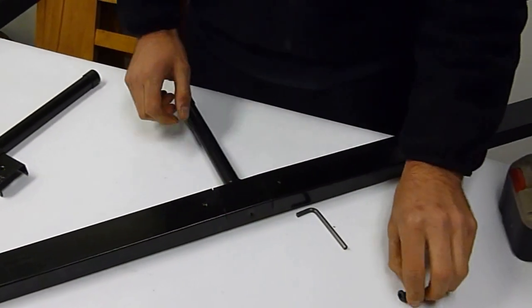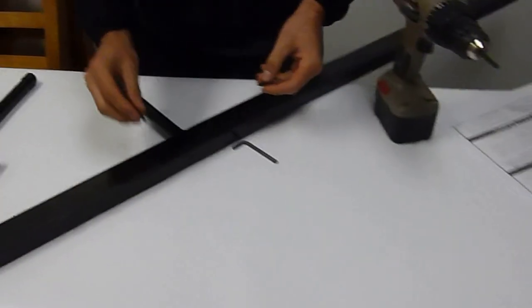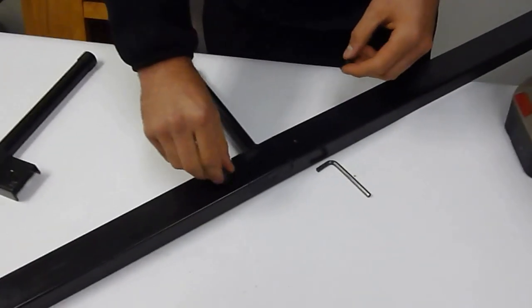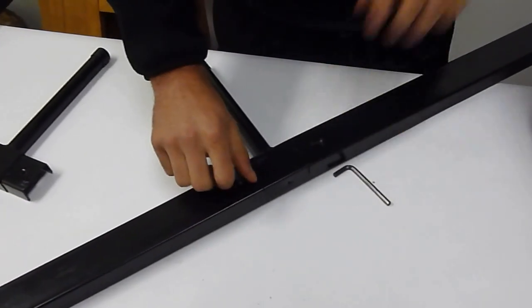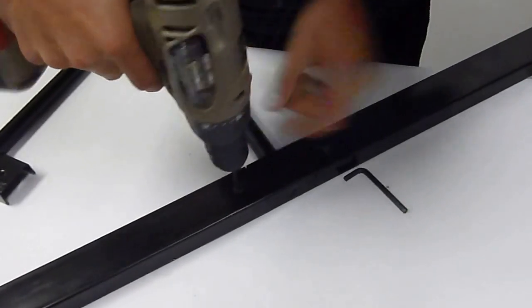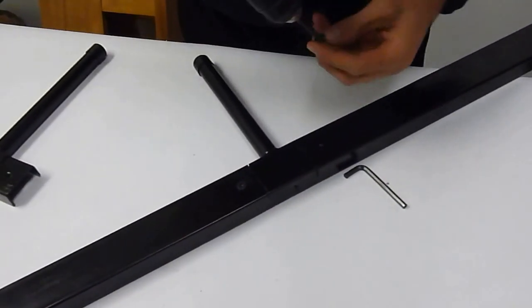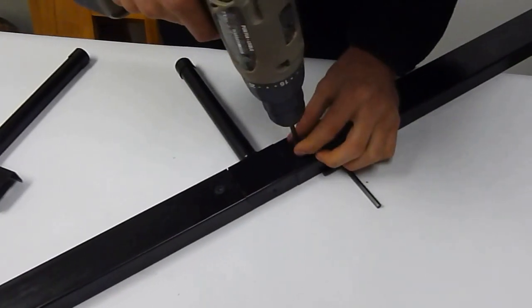Now, you're going to take two of your letter S-bolts, which is your shortest bolts that you have, and you're just going to put those in to the holes to connect the stretcher rails to the T-connector. Be careful not to over-tighten these ones, because it could damage the stretcher rails, and also strip the screws.